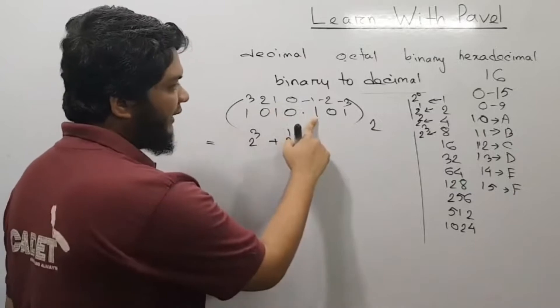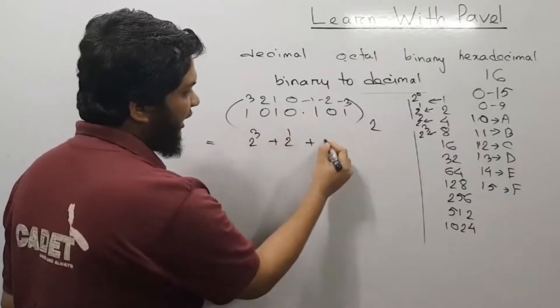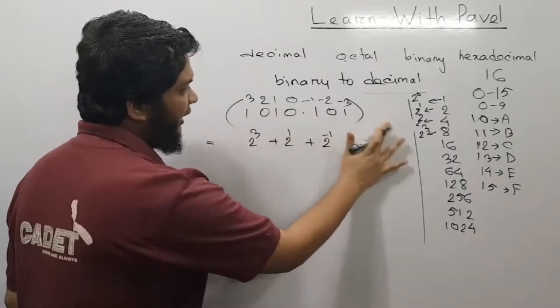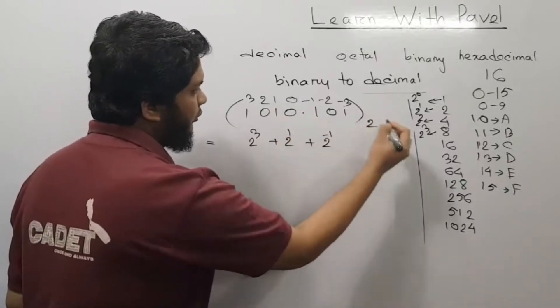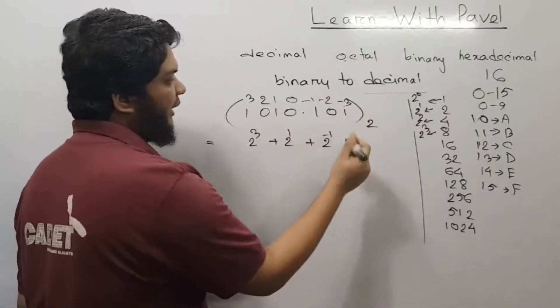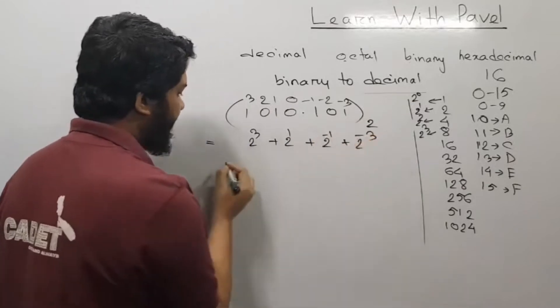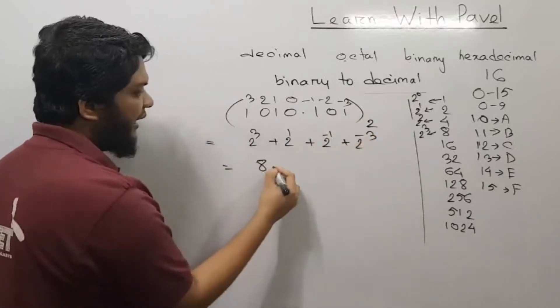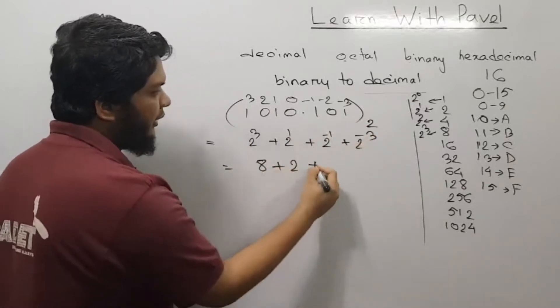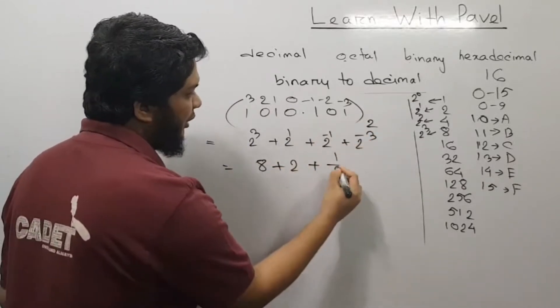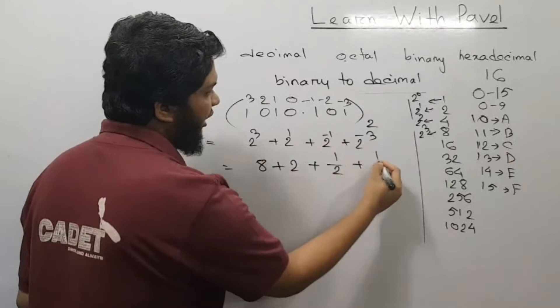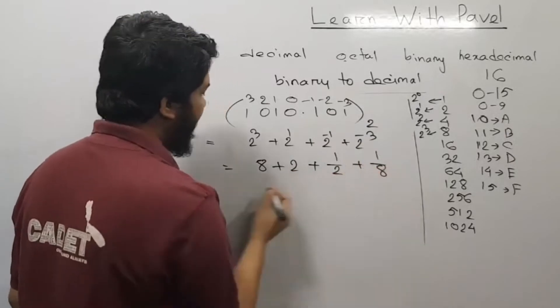1 into 2 to the power minus 1, this is minus 3, add 2. This will be 1 by 2, this will be 1 by 8.